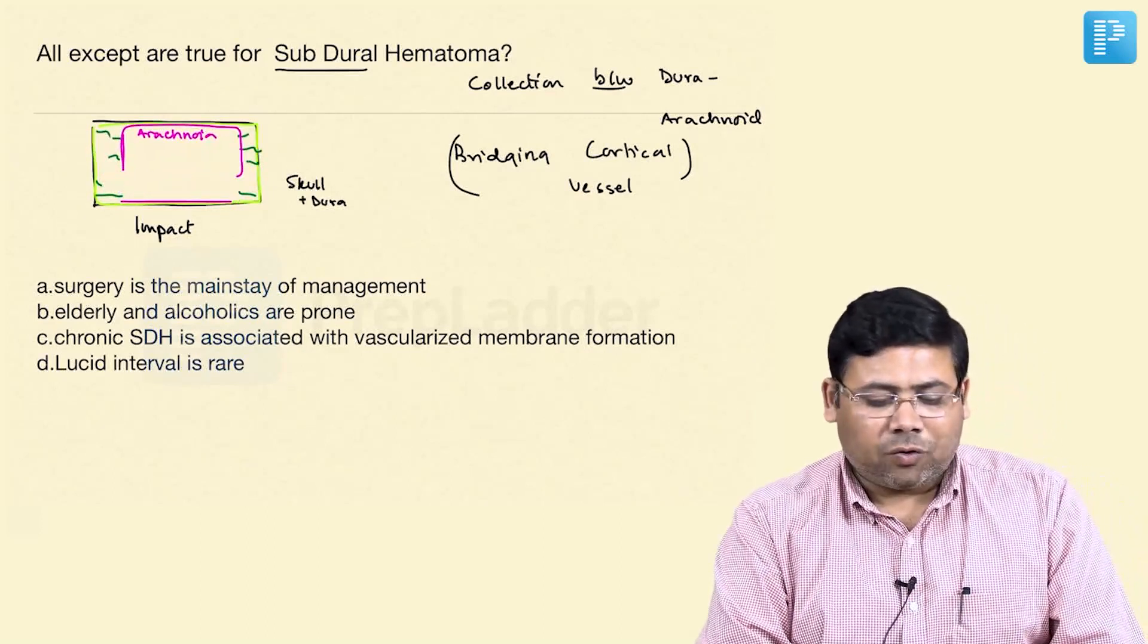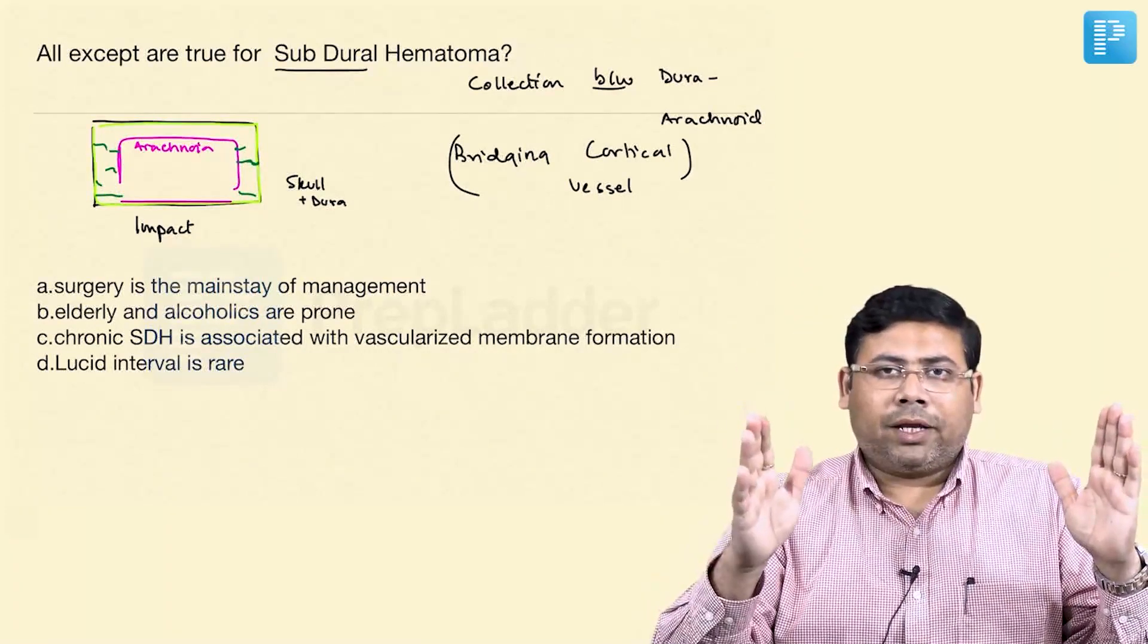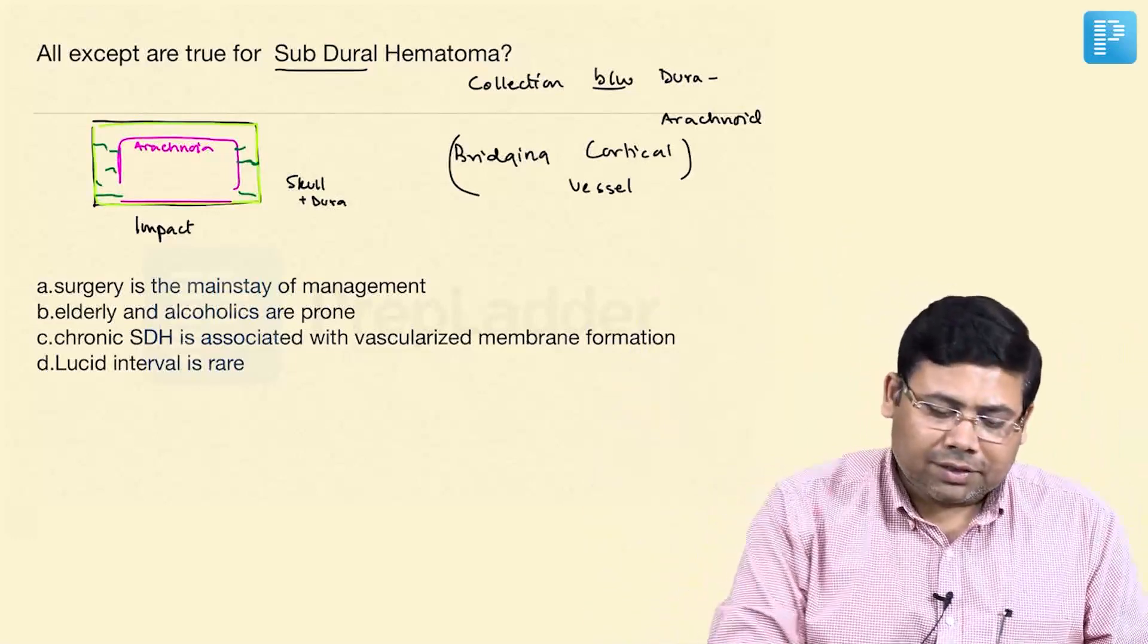So, there is a strain and this strain causes avulsion. It is just like, take this hand to be dura, this hand to be arachnoid. The dura does not move but arachnoid moves and there is a strain over the bridging cortical vessels.